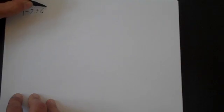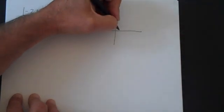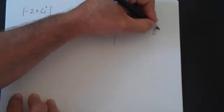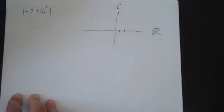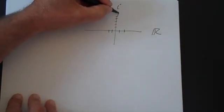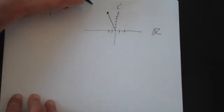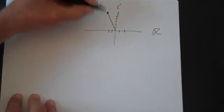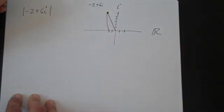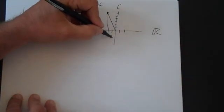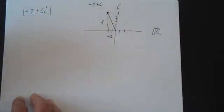Let's look at another problem: minus 2 plus 6i. You can plot it again — the real part is minus 2 and the imaginary part is positive 6. So that's minus 2 plus 6i plotted on the complex plane. This distance here is 2 and that's 6, so take the square root of that.